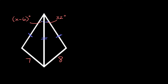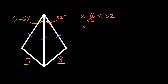Over here this angle is x minus 6 degrees and it opens up to this shorter side that is 7 units long. Since 7 is smaller than 8, this angle must be smaller than that angle. So we can say that x minus 6 degrees is less than 32 degrees. Adding 6 to both sides, we get that x is less than 38.